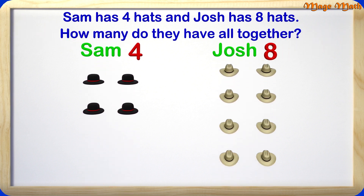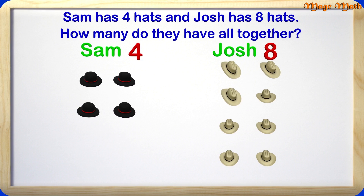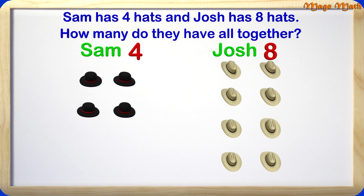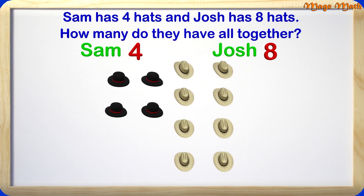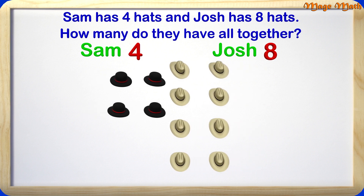Sam has 4 hats: 1, 2, 3, 4. Josh has 8 hats: 1, 2, 3, 4, 5, 6, 7, 8. The question is asking how many we have all together. All together means putting the groups of items together. We also call this adding.